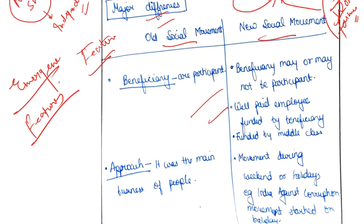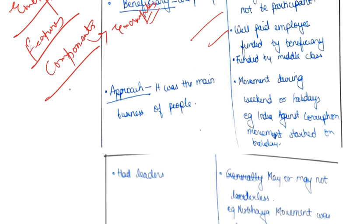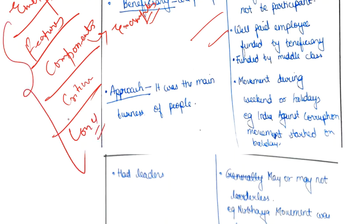Then you can have a section on the components of new social movements, and in that section you can incorporate examples like the Dalit movement, women's movement, and farmers' movement. You can also mention criticism, and then the conclusion. Throughout all these sections, please give special emphasis on the India-specific context because it is explicitly mentioned in the question.